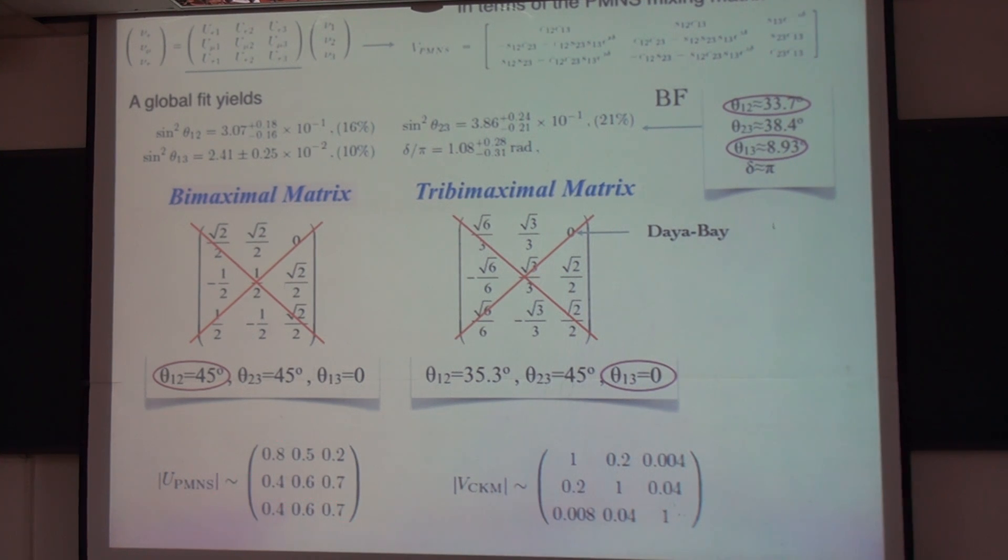People are talking about prediction, predicting this mixing matrix. But at my point, there's no point to do that, because we already measure the CKM very well. We know the quark mixing, but we cannot predict the CKM. How can we predict the neutrino mixing? And currently there's no mass hierarchy, so I think it's even harder. People are still writing papers about this mixing matrix, but I think it's very hard.